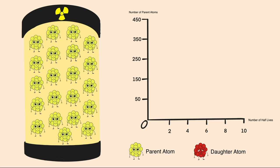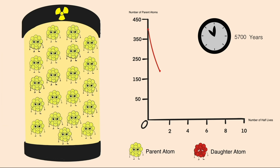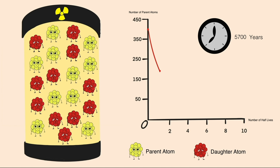At time equals zero, all the atoms are unstable. But as time progresses, nuclei start to decay at random until at one half-life — 5,700 years — half of the nuclei have decayed and are now stable.